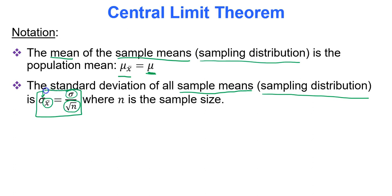In other words, the standard deviation is adjusted when you're trying to look at the standard deviation of a sampling distribution — the distribution of the sample means — as opposed to the distribution of basic sample values.